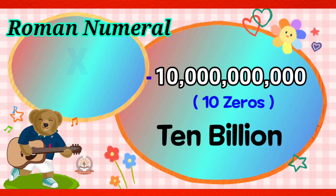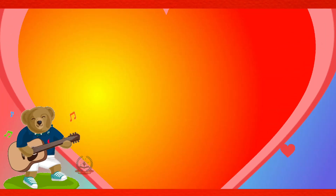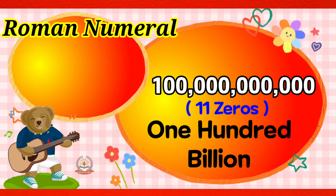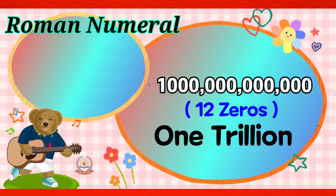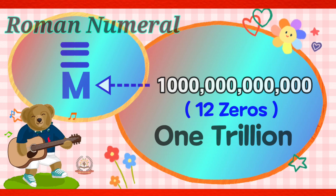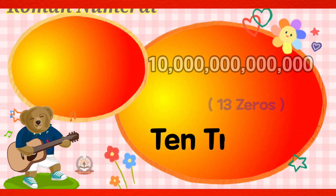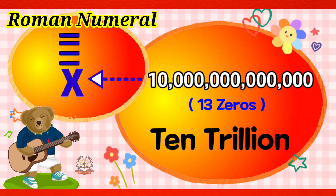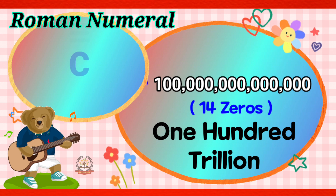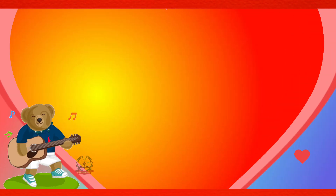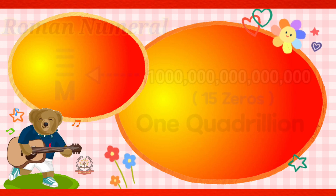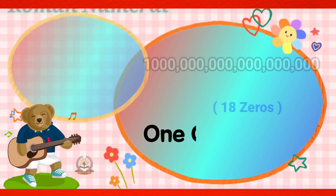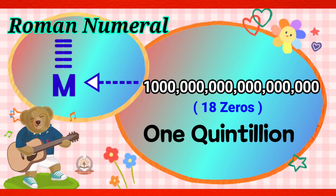10,000,000,000 is X with 3 bars at the top. 100,000,000,000 is C with 3 bars at the top. 1 trillion is M with 3 bars at the top. 10 trillion is X with 4 bars at the top. 100 trillion is C with 4 bars at the top. 1 quadrillion is M with 4 bars at the top. 1 quintillion is M with 5 bars at the top.